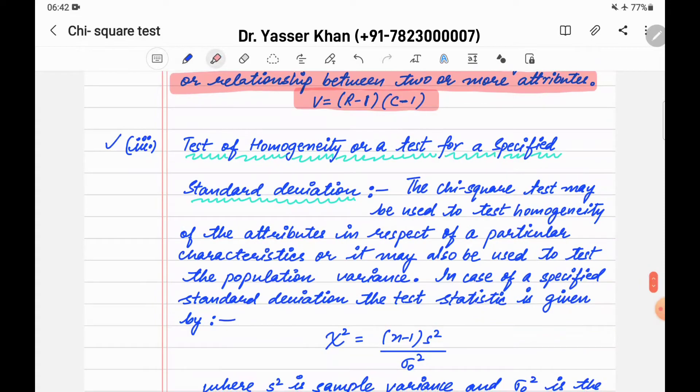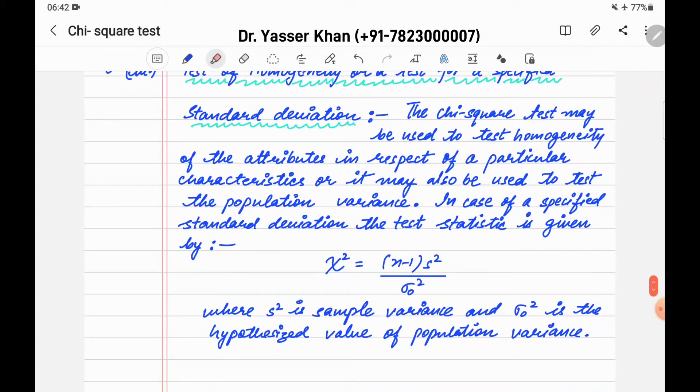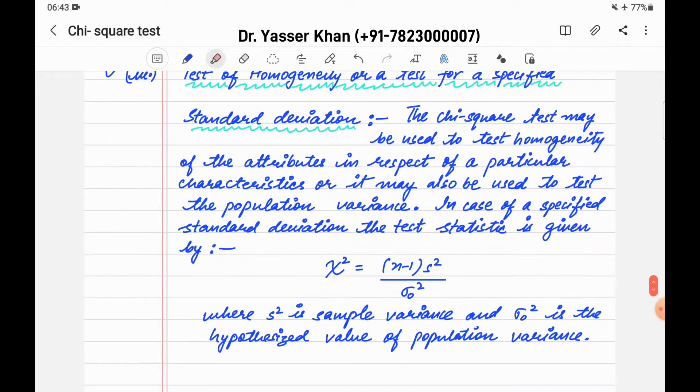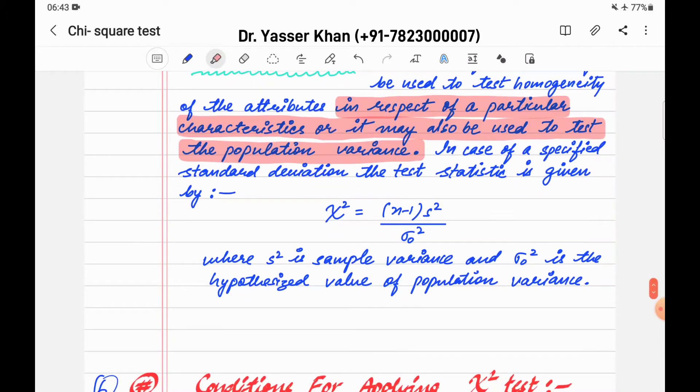Test of homogeneity or a test for a specific standard deviation. The Chi-square test may be used to test homogeneity of the attributes in respect of a particular characteristic, or it may also be used to test the population variance. This can be used to test the population variance or standard deviation.